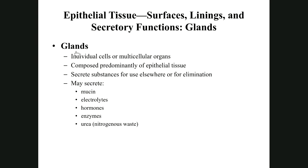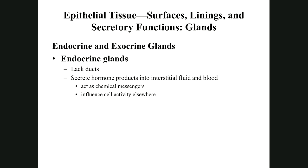Epithelial tissue forms linings, coverings, and glands. A gland is a structure that produces secretions. There is only one unicellular gland in the body — the goblet cell. The goblet cell makes mucus (specifically mucin, a pre-mucus). Goblet cells are the most numerous gland in the body. All other glands are multicellular.